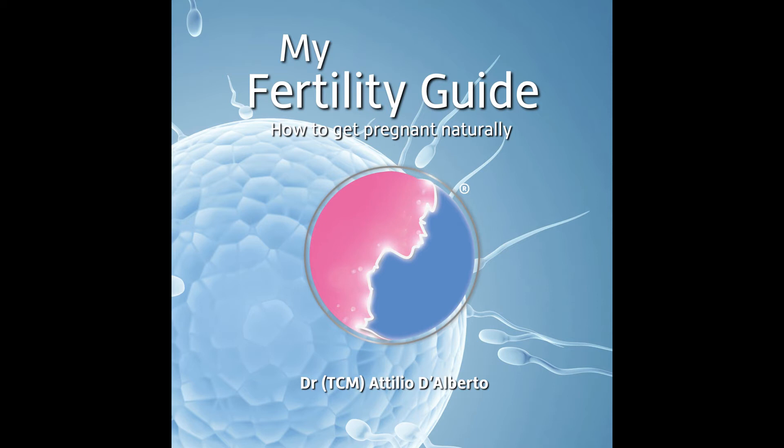It takes 85 days for the egg to grow from start to finish. A woman's uterus lining is also known as the uterine endometrial lining. It should be thick enough to allow an embryo to implant and grow, and shouldn't be hostile to implantation.